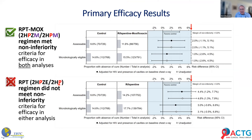For the rifapentine-moxifloxacin regimen compared to control in the microbiologically eligible population, there was only a 1% difference — clearly meeting the non-inferiority margin. For the per-protocol population excluding those without a 12-month follow-up visit, it was a 2% difference. The rifapentine-alone substitution was not successful and did not prove non-inferior. So the four-month rifapentine-moxifloxacin regimen was successful.